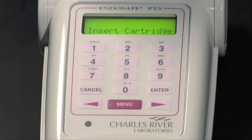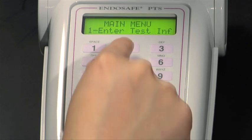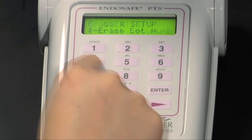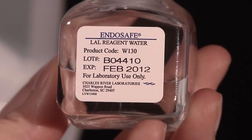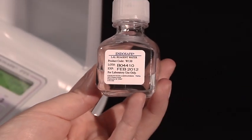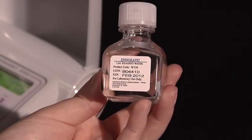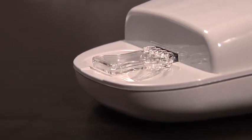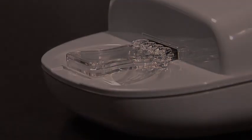If the calibration code for the particular lot number has already been entered, the PTS reader does not prompt for the code again. To erase all stored lot numbers and corresponding calibration codes, select Menu 2, then 4. Please note, all LAL reagent water used to make product dilutions should be tested for the absence of detectable endotoxin. While the above information is being entered into the PTS reader, the cartridge is being pre-warmed.